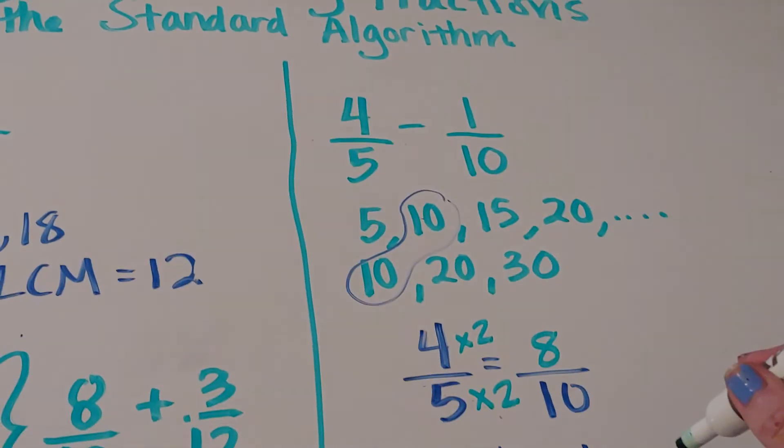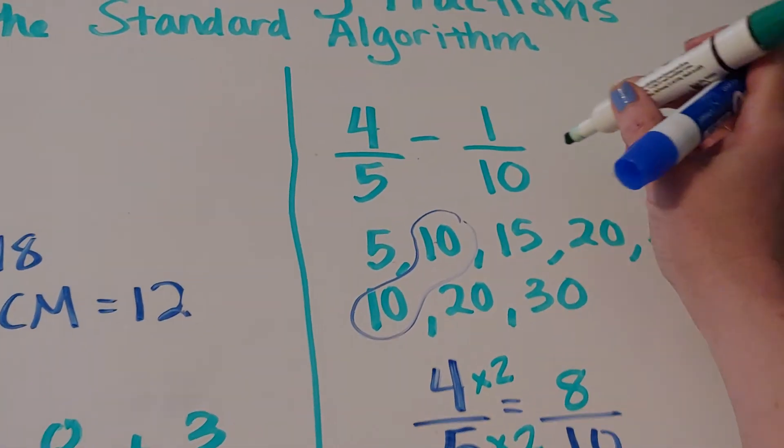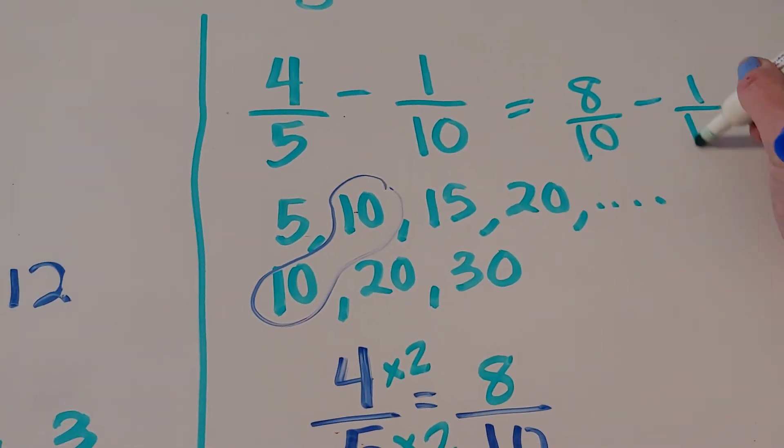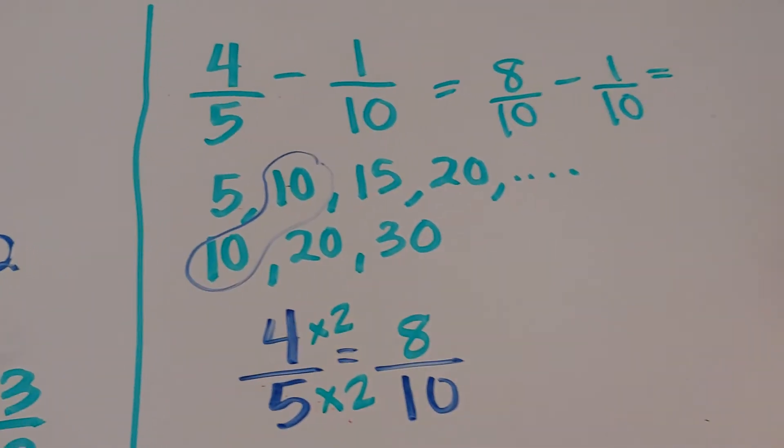So putting it together, it was 4 fifths minus 1 tenth. So that would be the same thing as 8 tenths minus 1 tenth. And 8 tenths minus 1 tenth is 7 tenths.